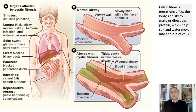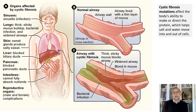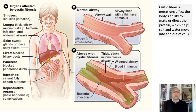Cystic fibrosis is an inherited disorder that causes severe damage to the lungs, digestive system, and other organs of the body. It affects the cells that produce mucus, sweat, and digestive juices. These secreted fluids are normally thin and slippery, but in people with cystic fibrosis, a defective gene causes the secretions to become sticky and thick. Instead of acting as a lubricant, the secretions plug up tubes, ducts, and passageways, especially in the lungs and pancreas.